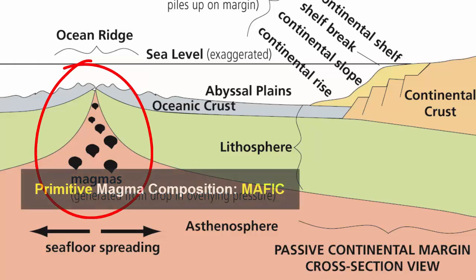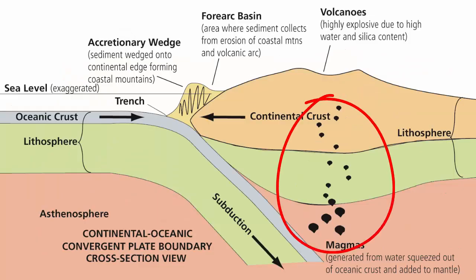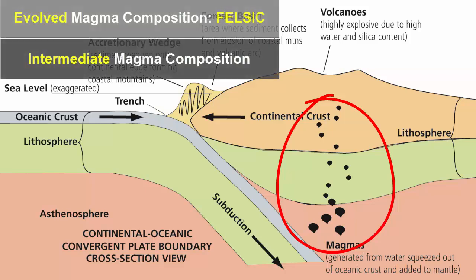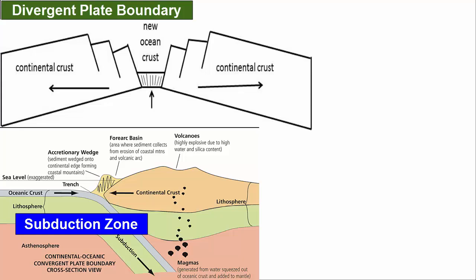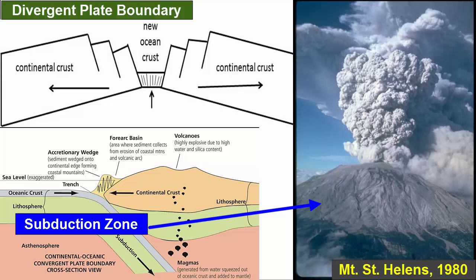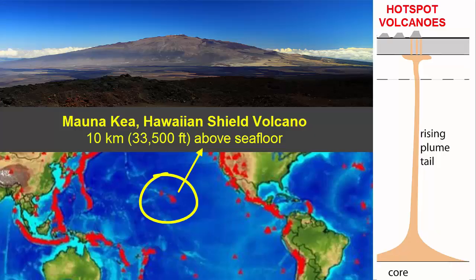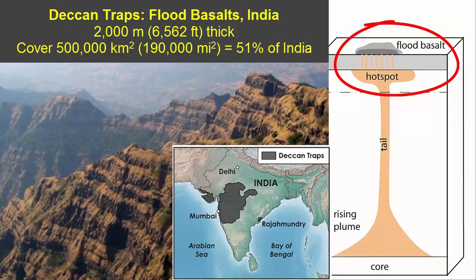When magmas move quickly through thin ocean crust, they are more likely to remain mafic in composition. When they rise slowly through thick continental crust, they are more likely to evolve to intermediate or felsic compositions. Therefore, divergent plate boundary and subduction zone volcanism that occurs through continental crust can produce some of the most explosive eruptions on the planet. Hotspot volcanoes have magma supplies about 10 times larger than divergent plate boundary or subduction zone volcanoes, and thus produce some of the largest volcanic landforms on the planet. That means the initial flood basalt eruptions are about 100 times larger than typical divergent plate boundary or subduction zone volcanoes.